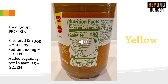This is a jar of peanut butter. It is considered a protein. This food has 3.5 grams of saturated fat per serving, which is yellow; 100 milligrams of sodium, which is green; and 1 gram of added sugars and 2 grams of total sugars, which is green. So sodium and sugars rank as green for this food, but saturated fat ranks as yellow. In this case, we use the least encouraged rank of color, which is yellow. This peanut butter is considered yellow.